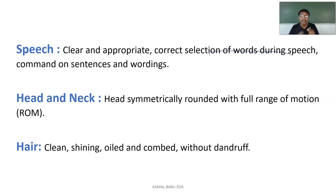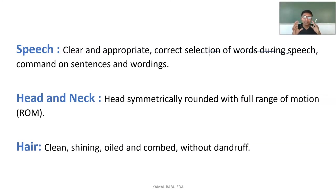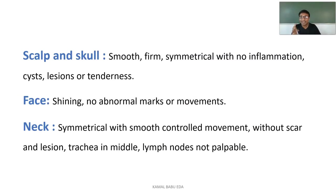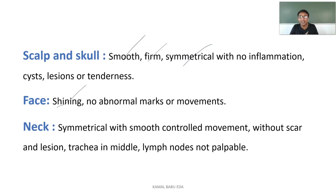The head should be symmetrically rounded with full range of motion. Healthy hair should be clean, shiny, oiled, and free of dandruff. The scalp should be smooth, firm, and symmetrical with no inflammation, cysts, lesions, or tenderness. The face should be shining with no abnormal marks. The neck should be symmetrical and smooth with controlled movement, no scars or lesions, trachea in the midline, and lymph nodes should not be palpable — if palpable, lymphadenopathy is present.